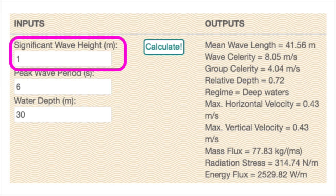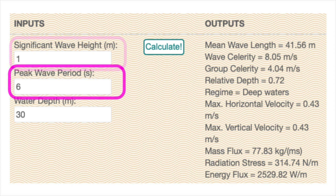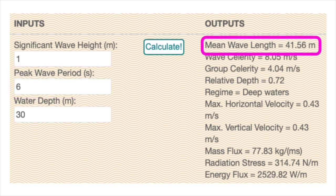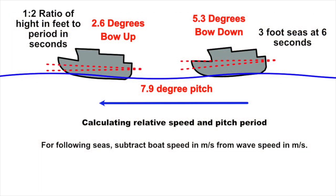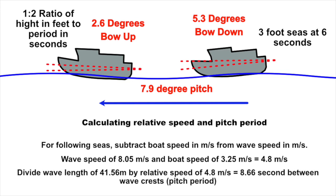Now let me show you the contrast of the 3 foot at 6 seconds. The wave speed now is 8 meters per second which is double what it was before. Once again we're going to subtract boat speed from wave speed. We take our 8.05 meters per second and subtract 3.25 of our boat speed to get 4.8 meters per second of our relative speed. We divide the wavelength by our relative speed and get 8.66 seconds between wave crests. For a 7.9 degree total pitch every almost 9 seconds that's a nice ride.